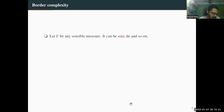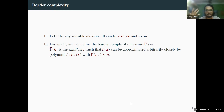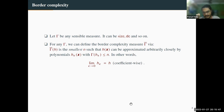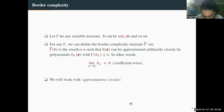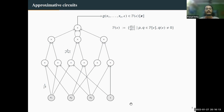Now let's define border complexity. For any measure γ, we define border complexity canonically as follows. Suppose you have a measured γ — let's say circuit size or determinantal complexity. You take a family of polynomials h_ε such that γ(h_ε) equals n, and the limit of h_ε is the polynomial h. Then we say the border complexity γ-bar of h is at most n. For this talk, I'll use the algebraic definition of approximative circuits.